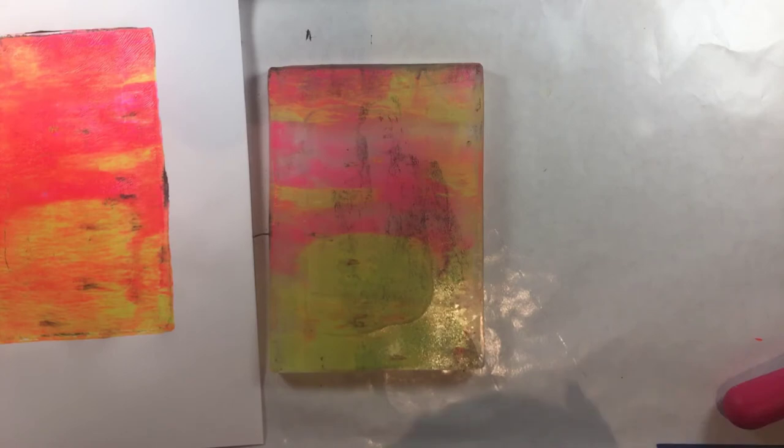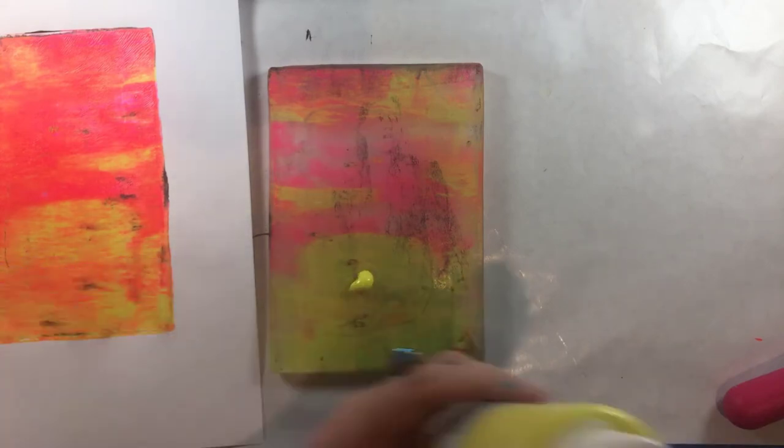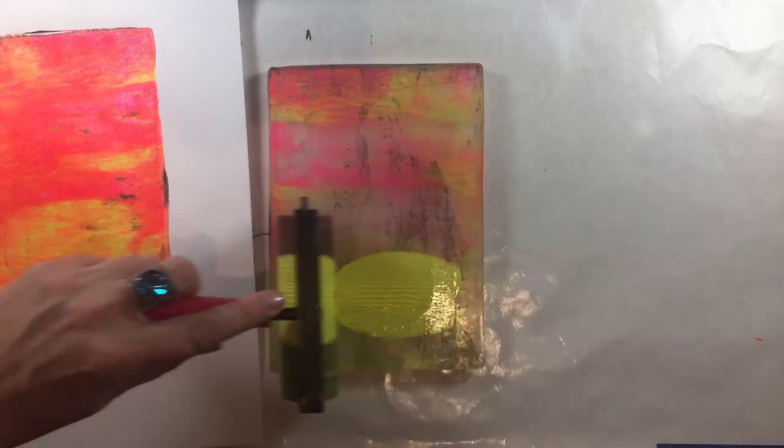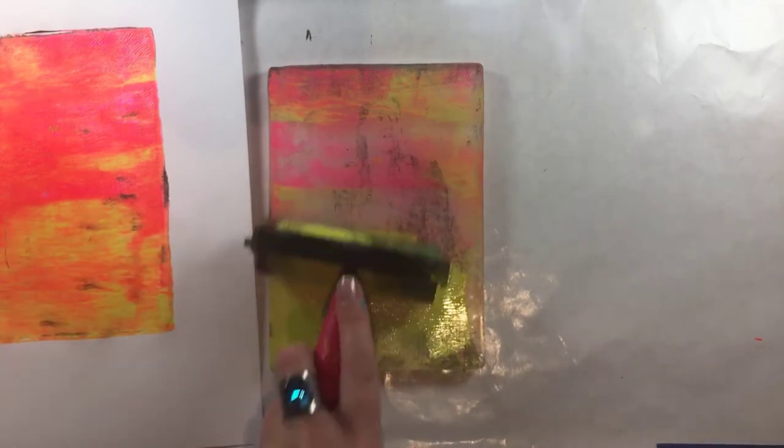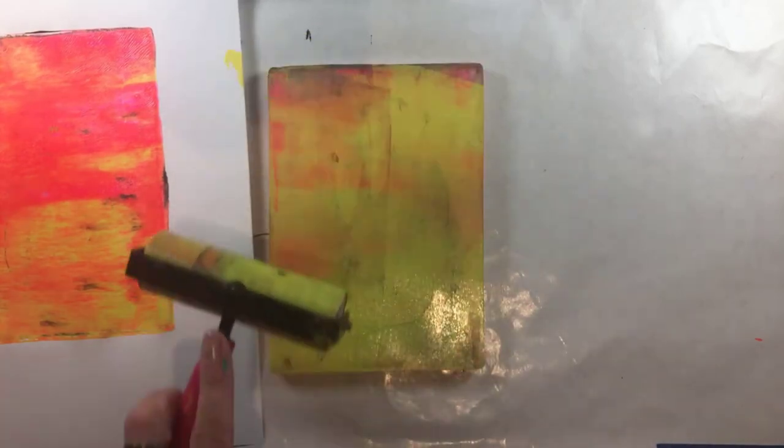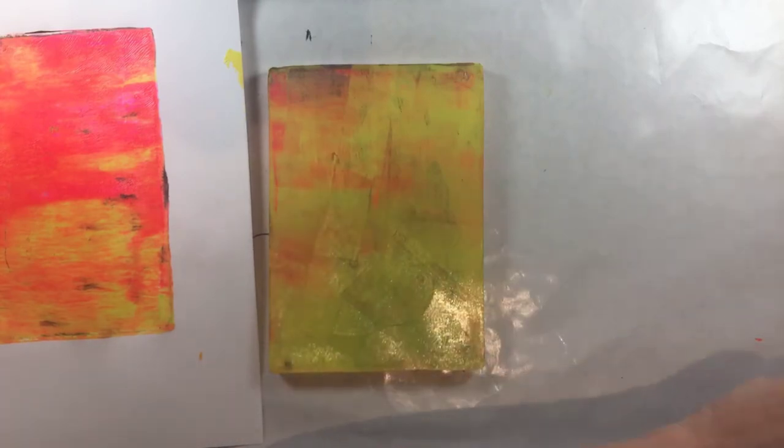But what's happening is when you have too much paint the paper isn't making good contact with that ghostly magazine image, and so it's not able to lift that image off the plate. In order for that to happen you need good adhesion between the paper and the image that is now on the bottom of that wet paint.